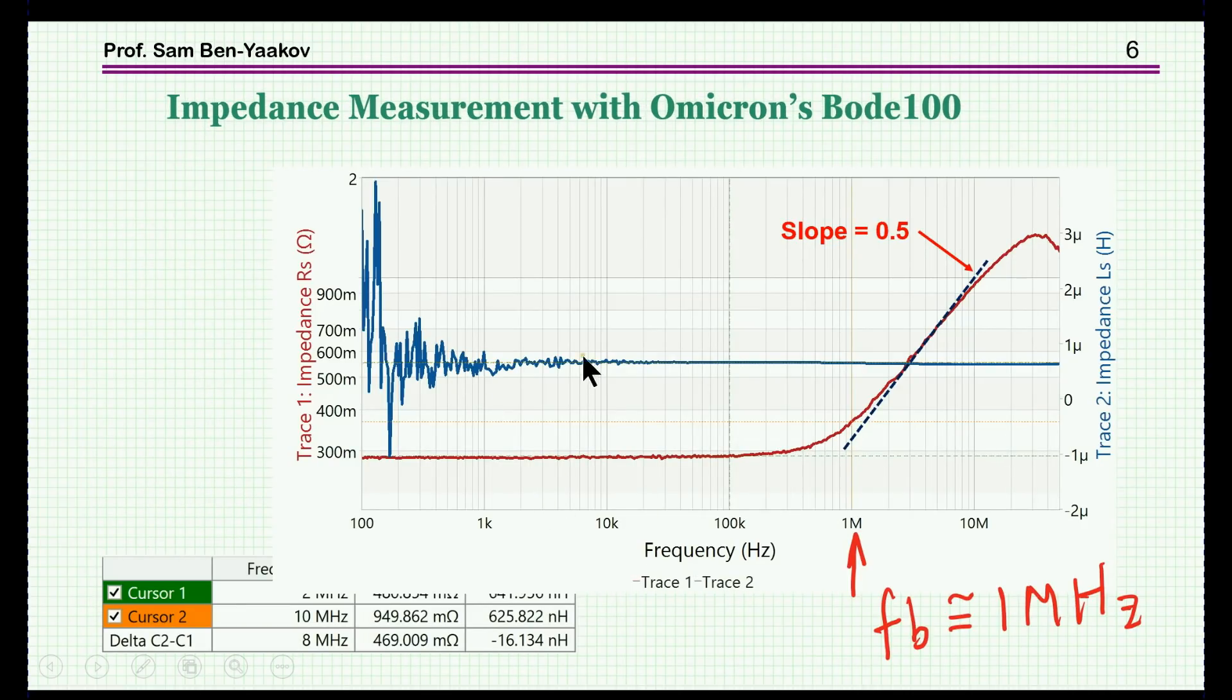Here's what we got. This blue one is the inductance, below one microhenry. Then we have the resistance as a function of frequency on log scale, and the slope here, if you take it at the middle, the asymptotic value, is about 0.5 as we would expect, and the break point is around 1 megahertz.